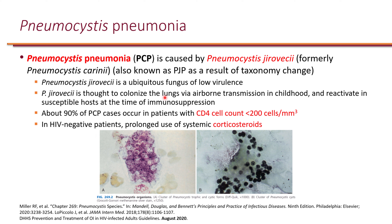Because this organism is ubiquitous, we are all thought to be exposed to it during childhood. In immunosuppressed patients, it can reactivate and in HIV specifically, it leads to lung infection and pneumonia. 90% of PCP cases occur when the CD4 cell count is less than 200 — an important cutoff to remember. Patients without HIV who are on prolonged systemic corticosteroids (at least 20 mg prednisone equivalent per day for at least 4 weeks) are also at risk because corticosteroids can reduce the CD4 count.